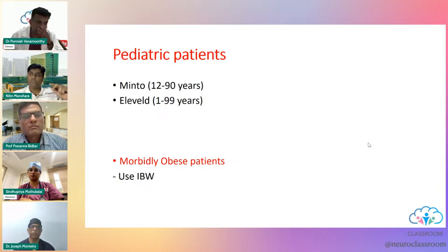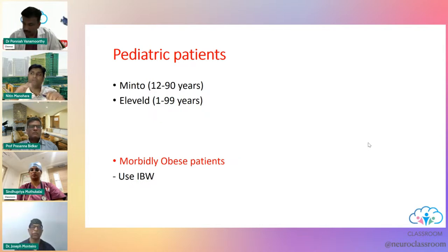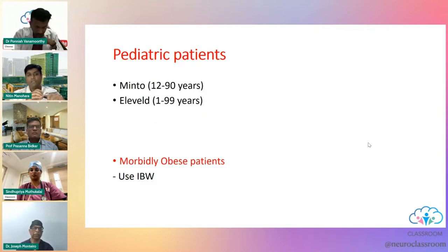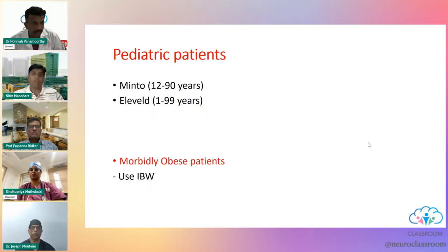For pediatric patients: the Minto model covers 12 to 90 years, but the Eleveld model covers 1 to 99 years, so if your pump has the Eleveld model you can use it for small pediatric patients. For slightly older children, we use remifentanil with mcg/kg/min infusion without TCI. For morbidly obese patients, use TCI based on ideal body weight rather than actual body weight, as you cannot set very high weights. We commonly use it for our bariatric surgery cases.